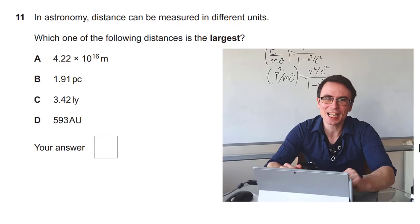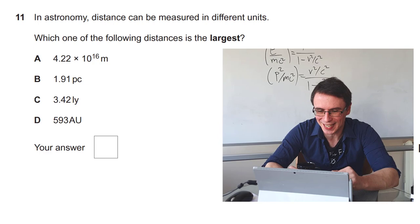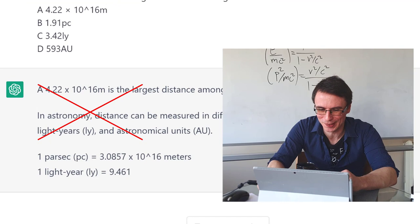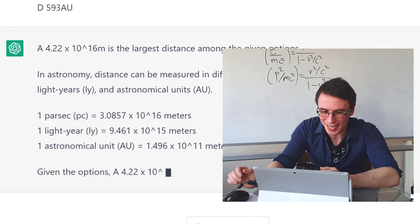Next one is about units in astronomy. Which one of the following distances is the largest? I'm expecting that it's going to do this very quickly. Let's have a look. What? It got this one wrong? I thought this would be one of the easiest questions for it to get right. The correct answer is B. However, it seems to have chosen A and it seems to have given us a completely different reasoning. Right AI, I'm a little bit disappointed.